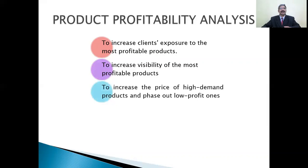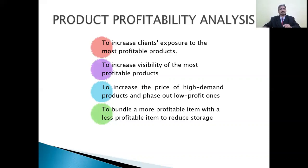Increase the price of high-demand products and phase out low-profitable ones. This is the formula of demand and supply. Whenever demand is high, we are selling at a higher price as per that demand. When product demand is high, we should raise the price and phase out loss-making or low-profit-making items. Bundle more profitable items with less profitable items to reduce storage and maintain store capacity management. We should enhance revenue and make a profitable part by revenue.